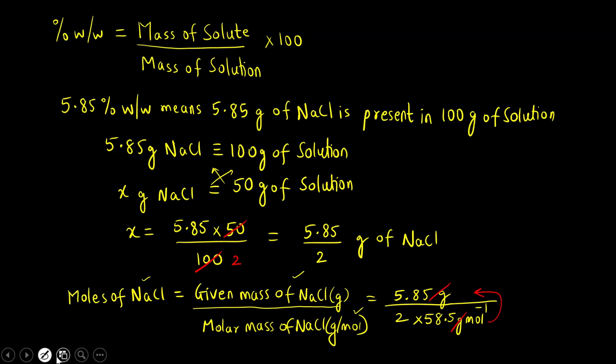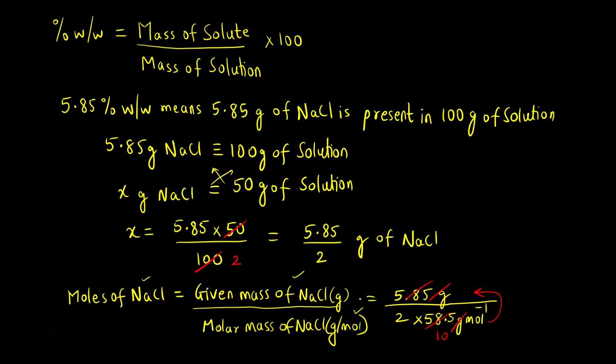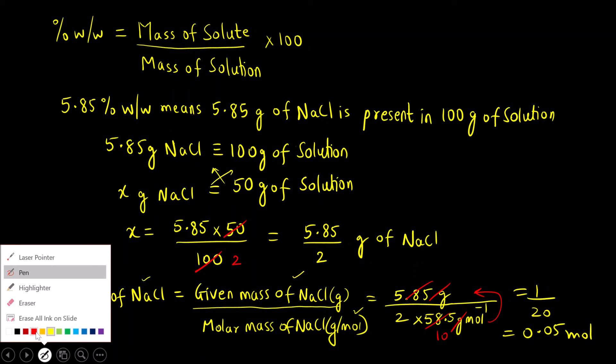This is 5.85 divided by 2 times 58.5. This is 1 divided by 2 times 10, which is 1 divided by 20, which is equal to 0.05 moles.